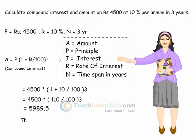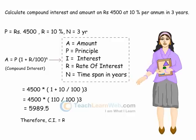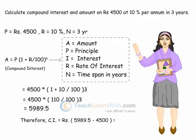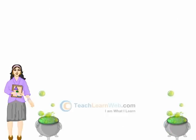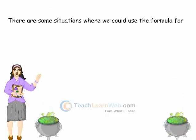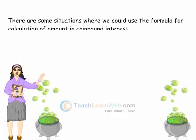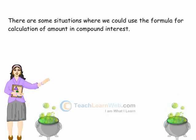Therefore, CI is equal to Rs 5,989.5 minus Rs 4,500, which equals Rs 1,489.5. There are some situations where we could use the formula for calculation of amount in compound interest.